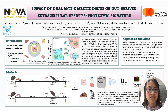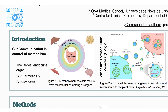We will start with some background. Metabolic homeostasis results from the interaction among all organs, and the gut plays a special role within this interaction because it is the largest endocrine organ. Its permeability allows the passage of cells or other bodies, and the gut-liver axis allows direct communication with the liver. One of the ways the gut uses to communicate with other organs is through extracellular vesicles, also known as EVs.